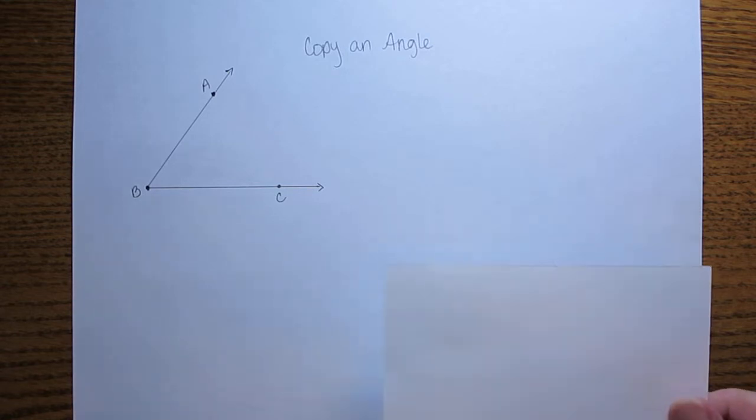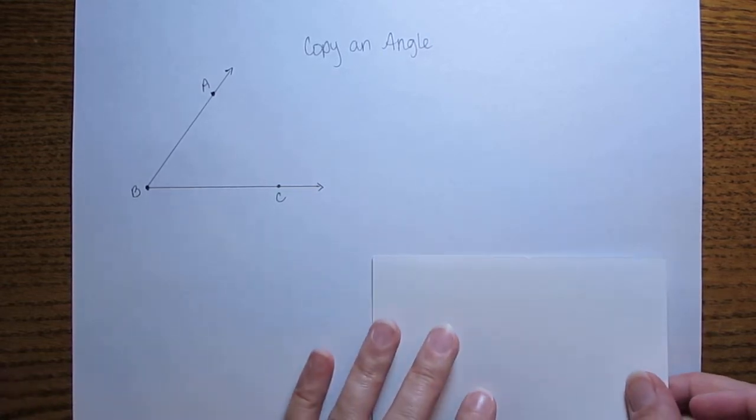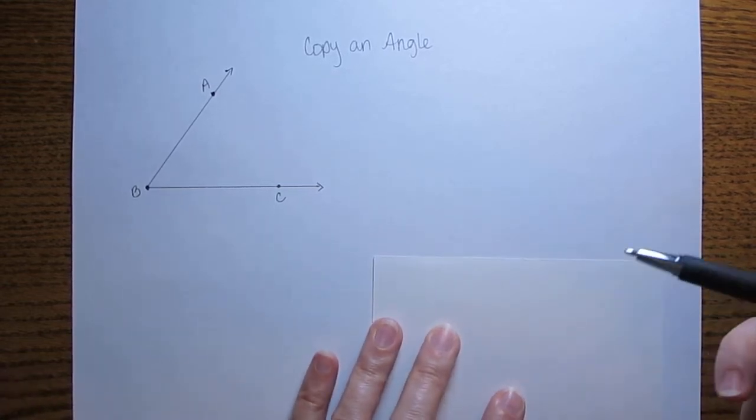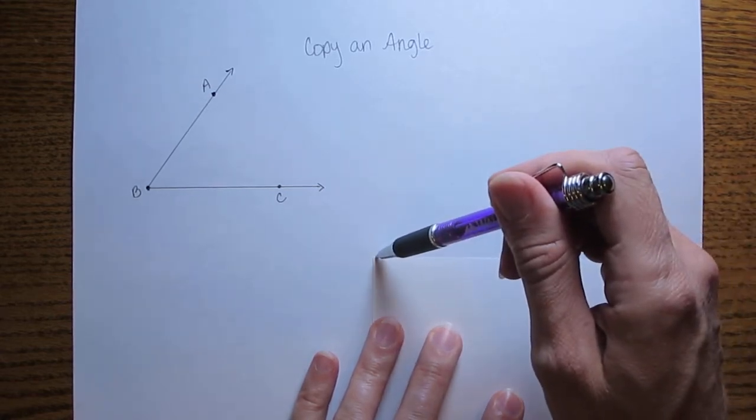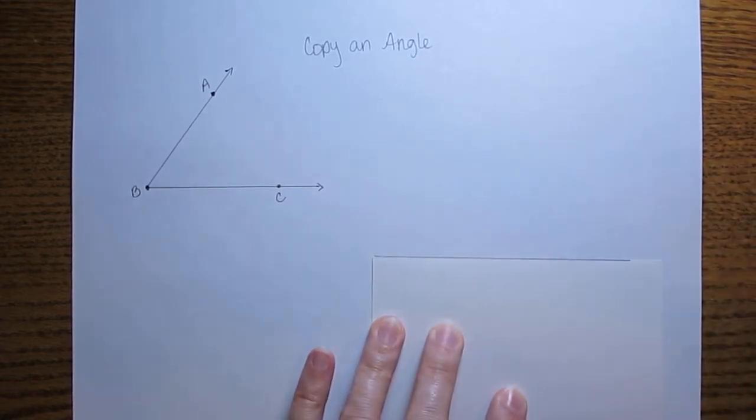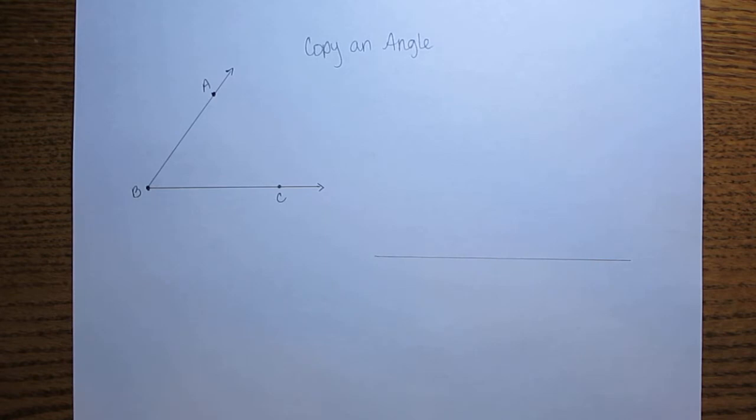So we're going to start this with using a straight edge. You can use a ruler or the bottom of a protractor. I'm just going to use the bottom of a note card. Any straight edge will do. Draw a line that is going to be the bottom of your new angle.